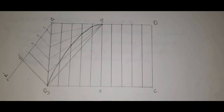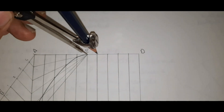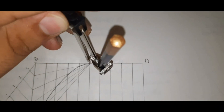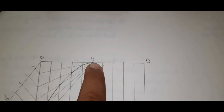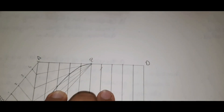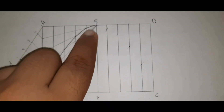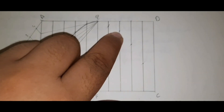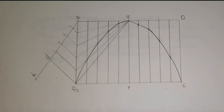First divide the other rectangle into 5 equal parts. Putting the pointer at E and taking the radius E to point 1, make an arc. Similarly, take E as center and radius E to point 2, making an arc on the 2nd line. Repeat for points 3 and 4. Here we get all 4 points. Now join these 3 points using a French curve, then the remaining 2 points, and finally the last points. Here our parabola is ready.